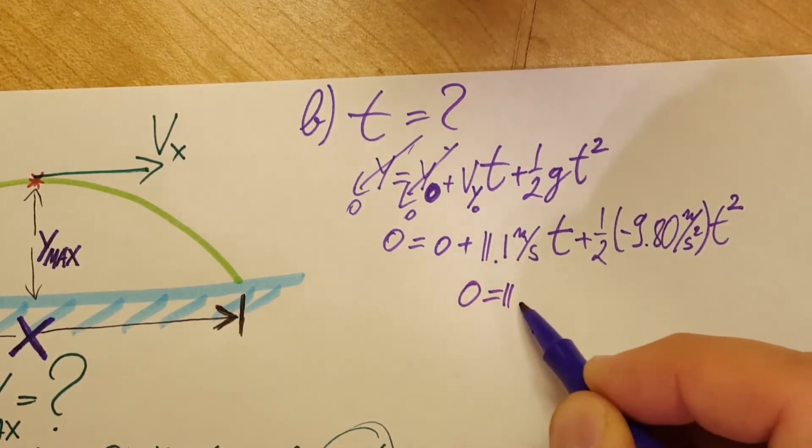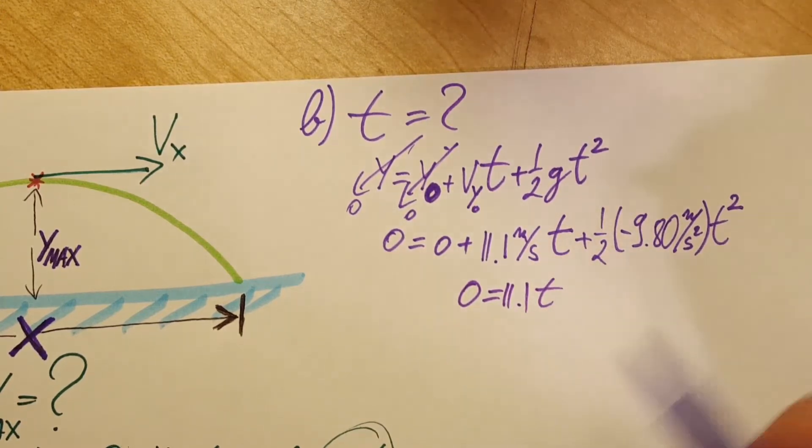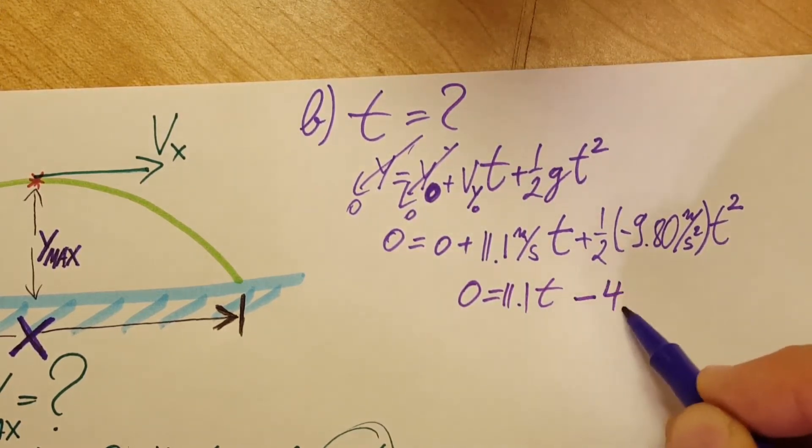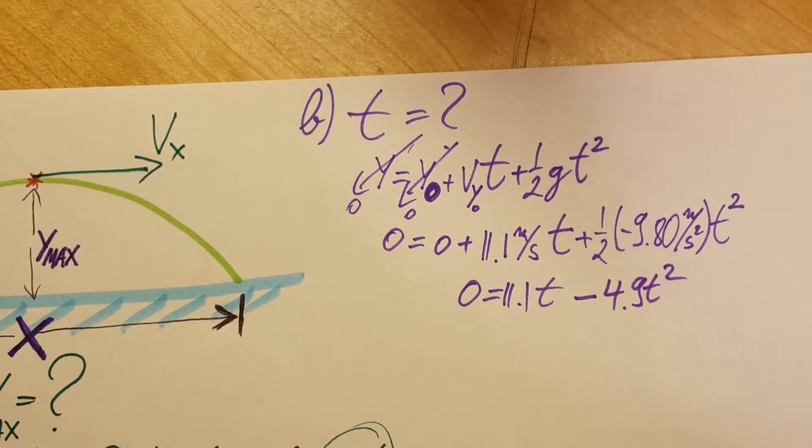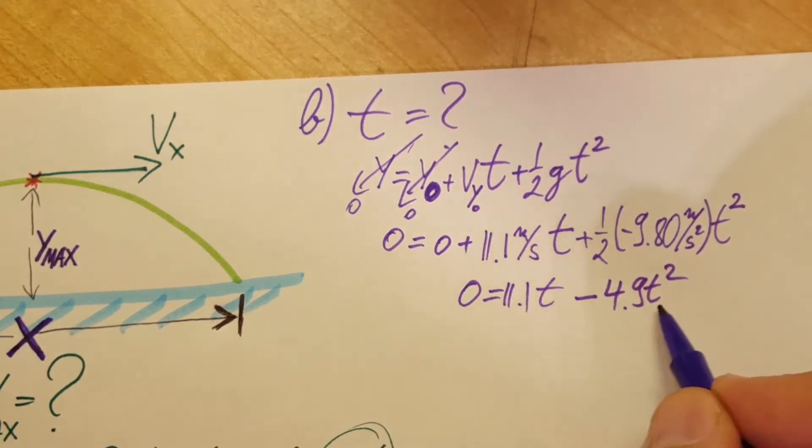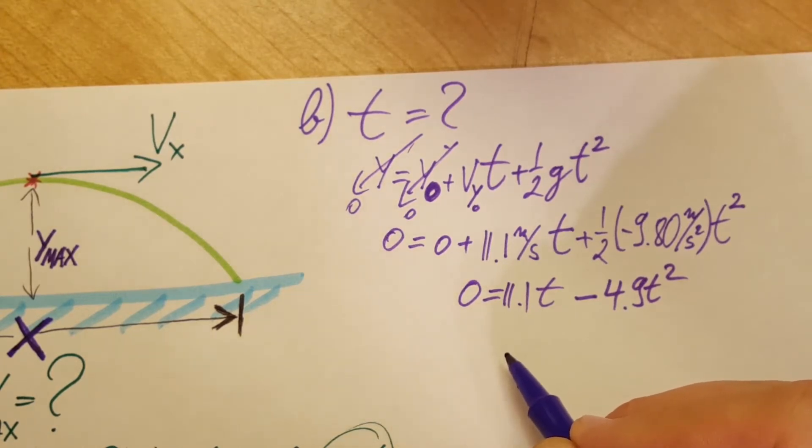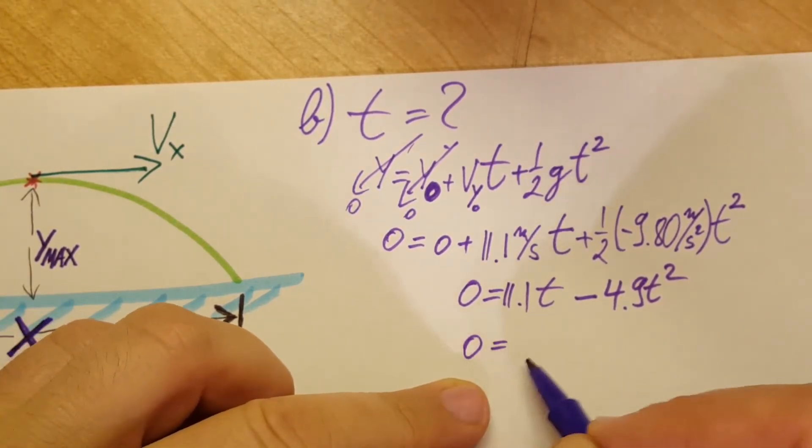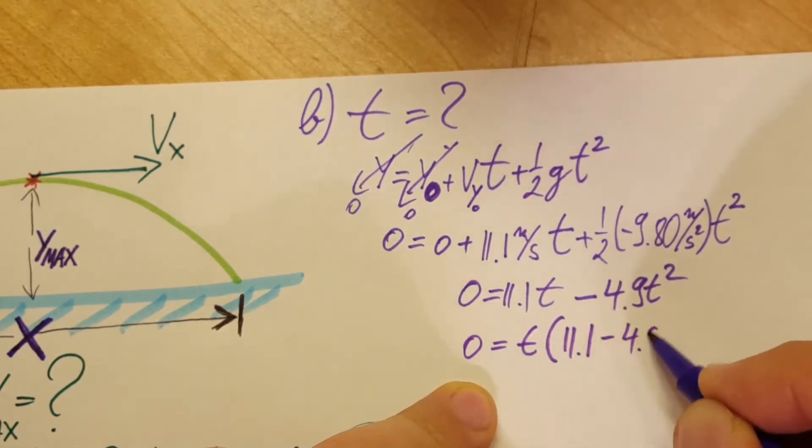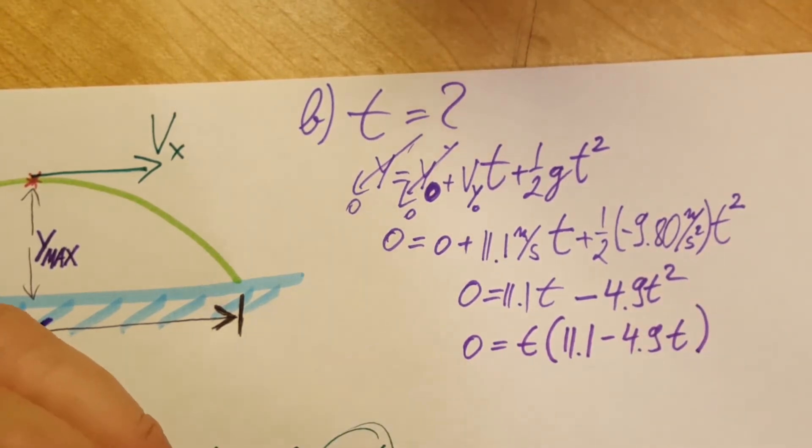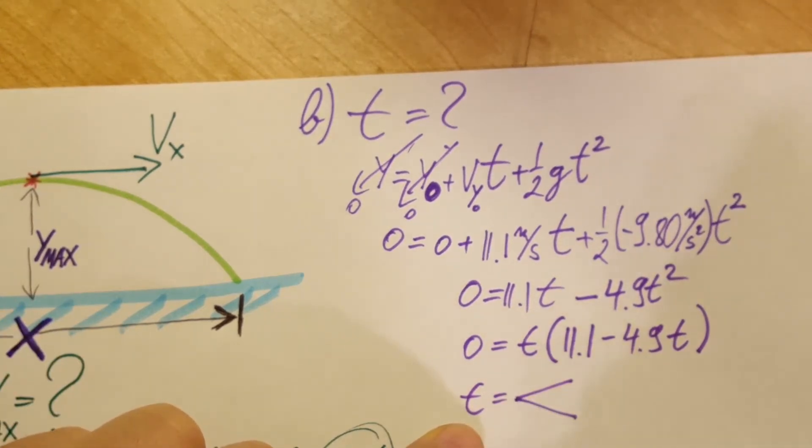From here: zero equals 11.1t. I'm gonna neglect the units right now. Minus 4.9t². So we can see that this is just a simple quadratic equation. We can factor out the t. Zero equals t times (11.1 - 4.9t). And simply solving these we're gonna get two values: one is zero and the second one is 2.26 seconds.